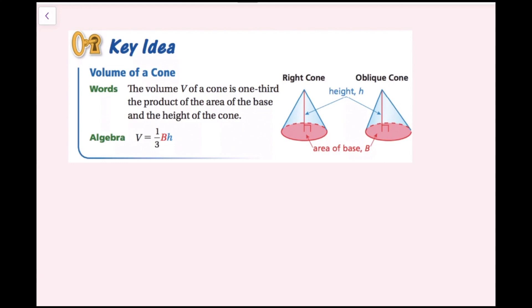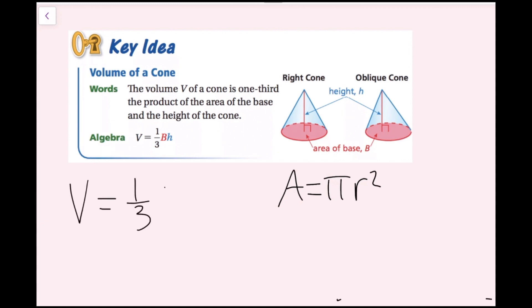The volume V of a cone is one-third the product of the area of the base and the height of the cone. In algebra, that is V equals one-third capital B — which is the base area — times the height. The base area of this cone is a circle, and the area of a circle is A equals pi r squared. So I can rewrite the equation as: volume of a cone equals one-third pi r squared h.